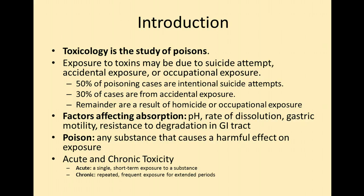There are a couple different types of toxicity. Acute versus chronic. Acute is fast and short-term. Chronic would be repeatedly over a period of time. An example of acute toxicity might be a college student doing 21 shots on their 21st birthday. Chronic would be somebody exposed to a pesticide in a work environment over a long period of time.